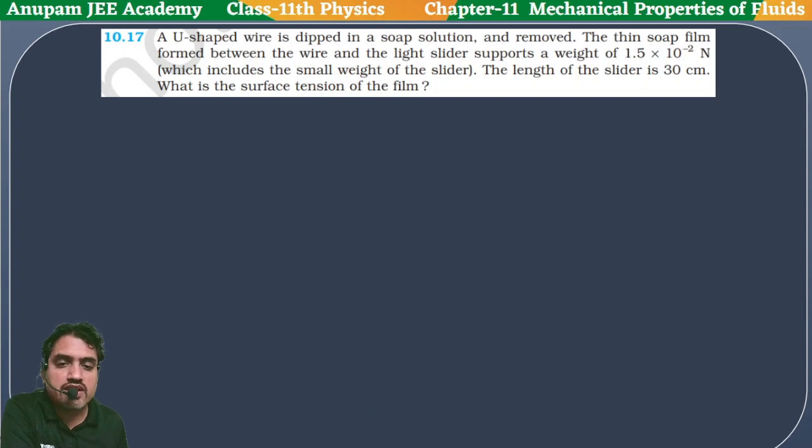Question number 10.17: A U-shaped wire is dipped in a soap solution and removed. A thin soap film formed between the wire and the light slider supports a weight of 1.5 × 10^-2 newton.